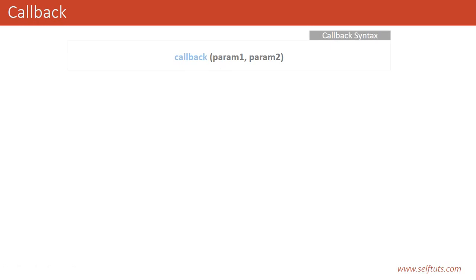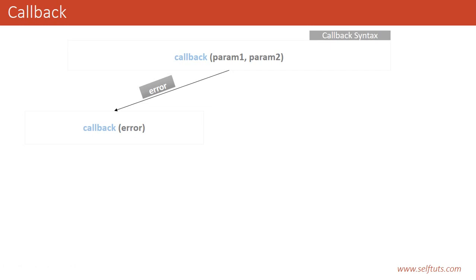If the case is an error, then we need to set the first parameter and we don't need to set the second parameter. If this first parameter is non-null, it means we are trying to throw an error, which means our Lambda function is going to throw an error if we provide the first parameter and it is not null.